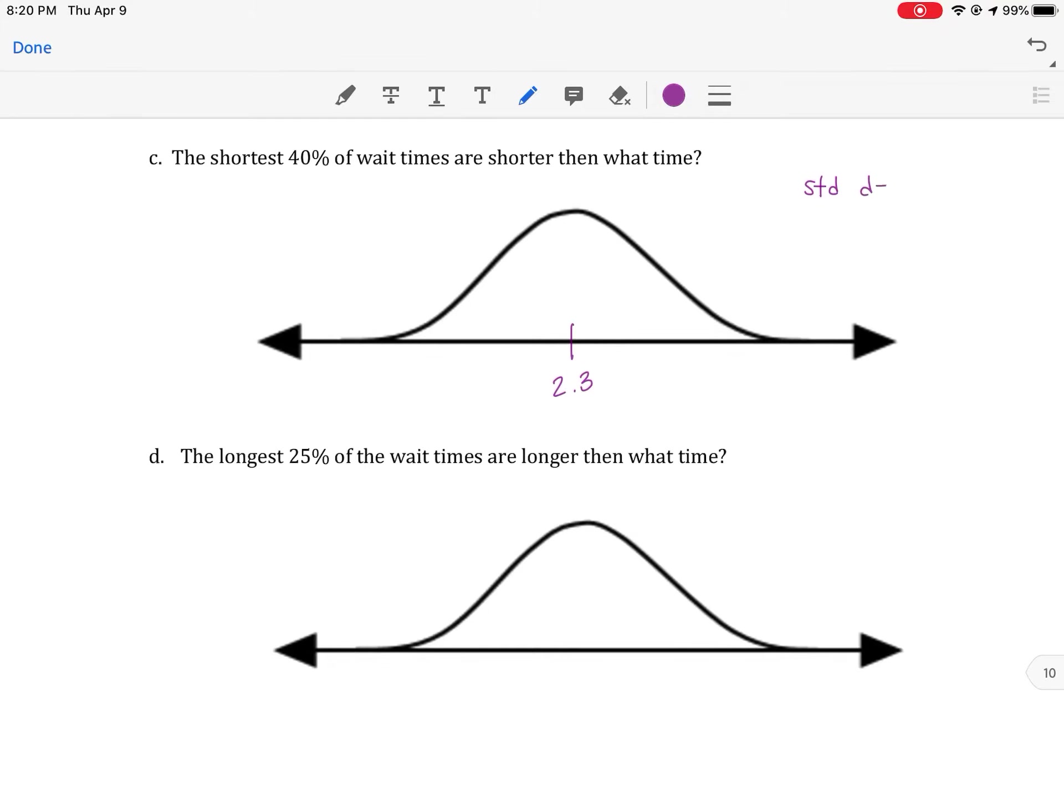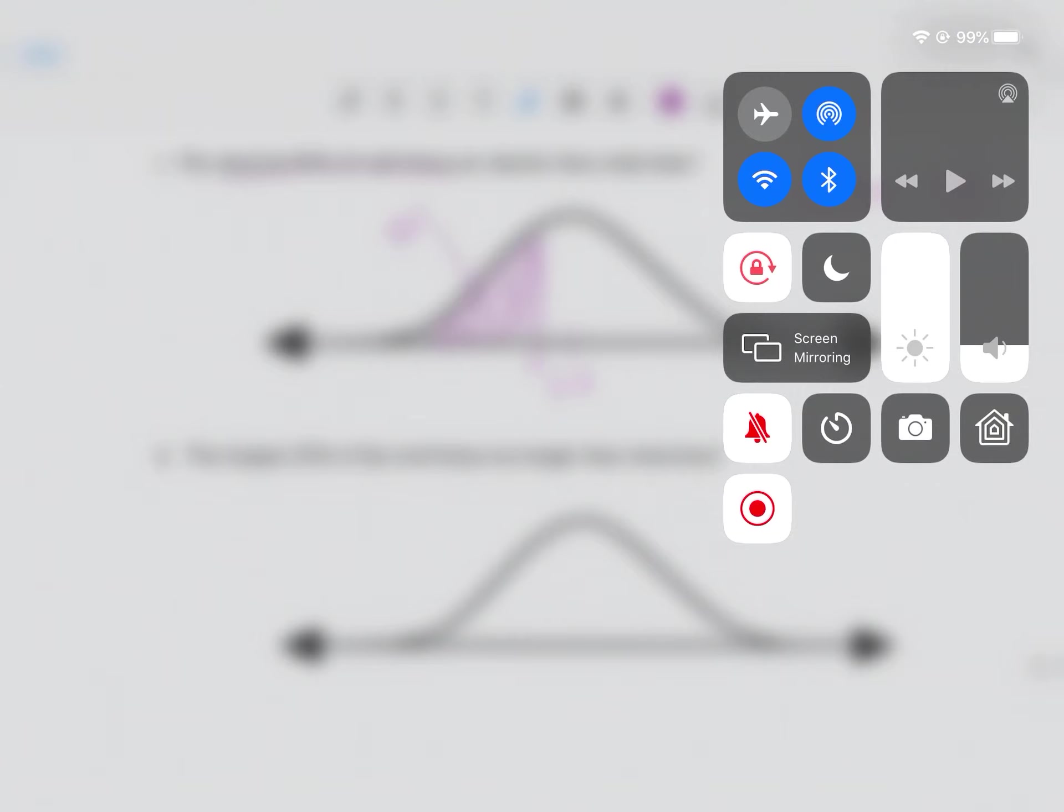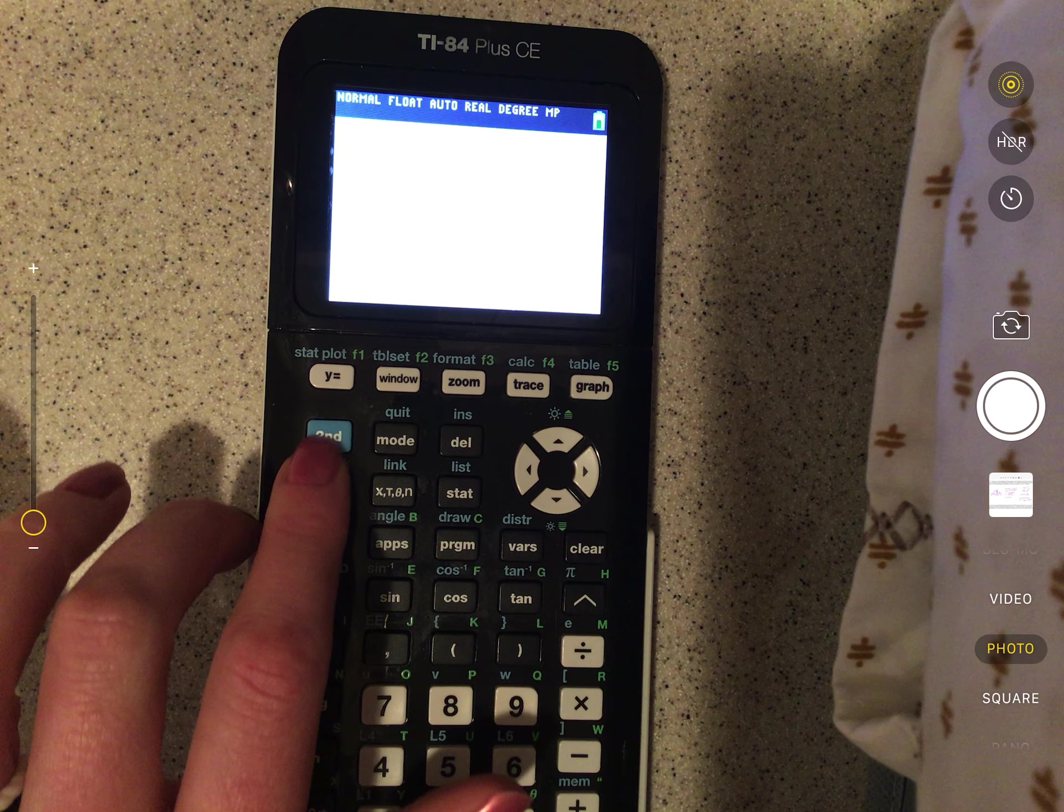In this case, the mean is still 2.3 and the standard deviation is 0.42. But this time, now we're looking for the shortest 40% of wait times. So this time we're given an area and we want to find the cutoff. We're talking about the shortest time, meaning the left side. So we know that this area is 40% and we're saying what's this cutoff, which I'm going to call x, and we want to find that. This process is a little bit different and we're going to use what we call the inverse normal.